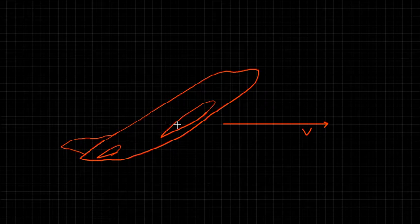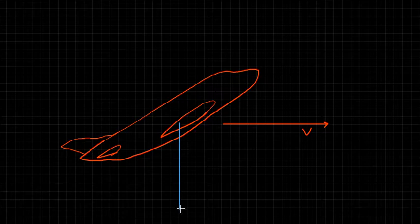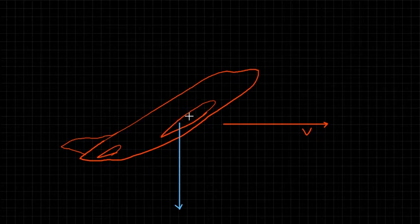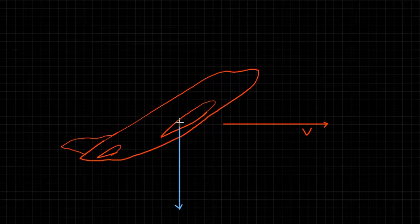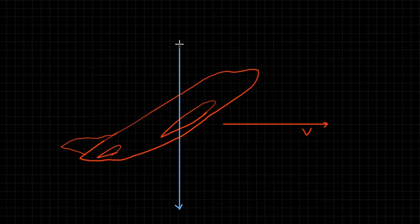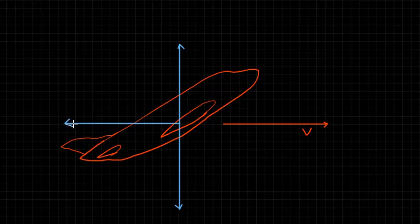Let's start with the weight, which acts from the center of gravity straight down toward the center of the earth. Recall from aerodynamics that lift acts perpendicular to the velocity vector, and drag acts parallel to the free stream velocity vector. So lift acts straight up and drag acts straight back.